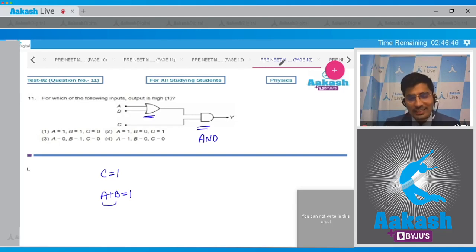Therefore we can clearly see as per this logic that the only option that matches our criteria is option number 2, where A is 1 and B is 0, which means the output for the first gate will be 1. And here C is also equal to 1, therefore both inputs for the AND gate is 1 and therefore the output will be 1 as well. And hence for this question the correct answer is option number 2.